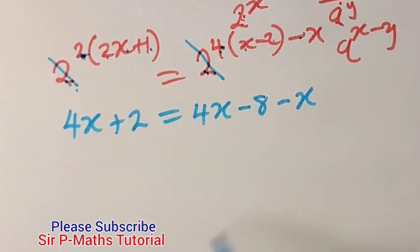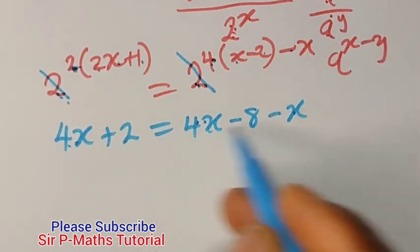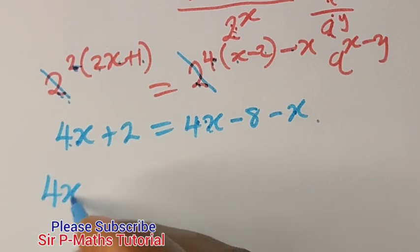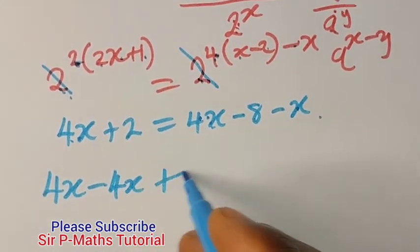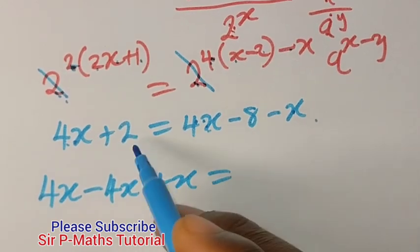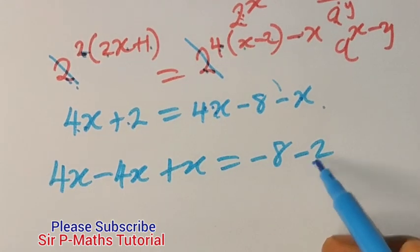Then let us add and collect like terms. 4x and 4x and then x. So these 2 will come over here. I will now have 4x minus 4x plus x equal to minus 8 minus 2. This 2 will cross over and become negative.